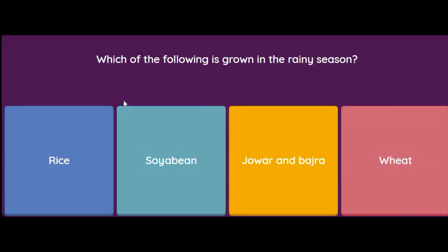This brings us to the last question of this MCQ and chapter. Which of the following is grown in the rainy season? Rice, soybean, jowar and bajra, or wheat? The answer is jowar and bajra. I wish you all success, children — good luck for your exams and life. Thank you for watching. Please like and share my videos with your friends.